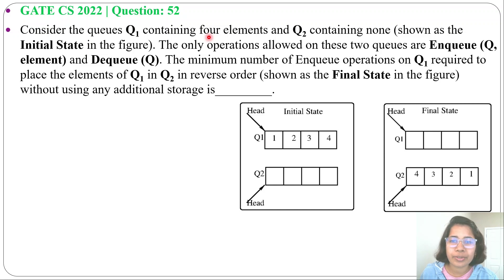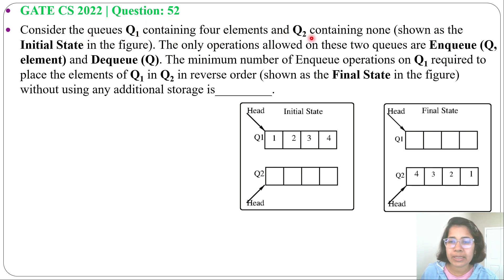Let's solve one previous question from GATE CH 2022, question number 52. Consider two queues: Q1 containing 4 elements and Q2 containing none, shown as the initial state in the figure.